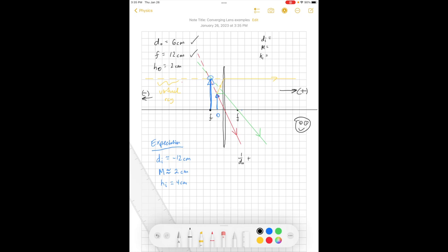The lens equation, 1 over DI plus 1 over DO is equal to 1 over F. And we might as well use that first to figure out what is DI. 1 over DI is 1 over F minus 1 over DO. The focal length is 12, so 1 over 12 centimeters. The object distance is 6 centimeters, so minus 1 over 6.